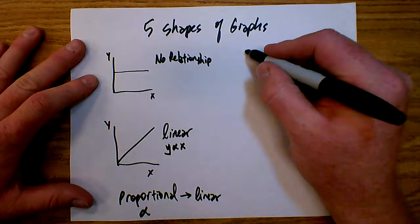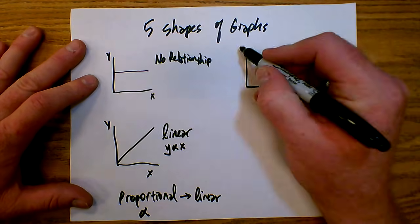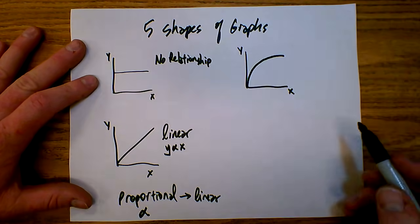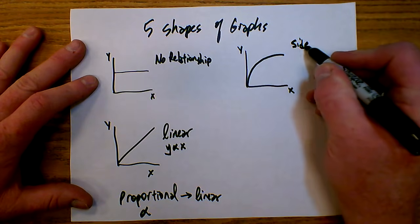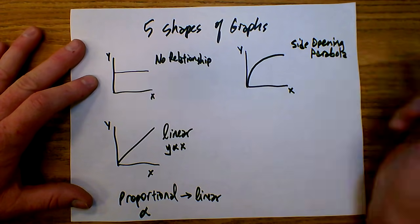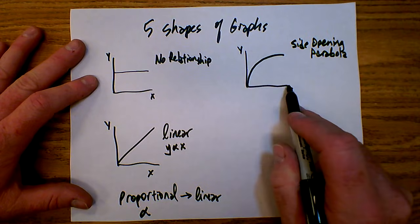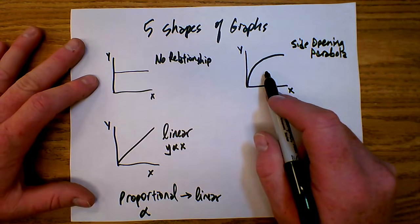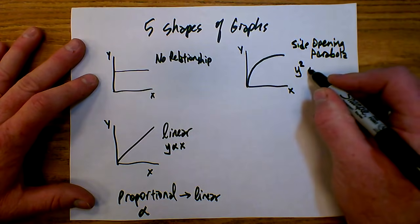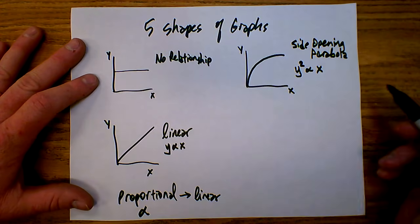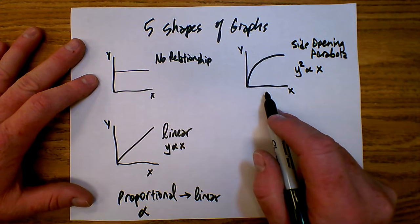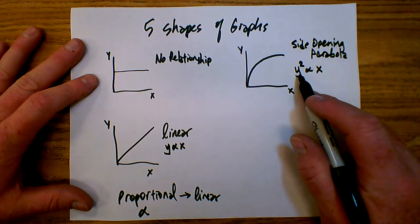The third type of graph we might encounter I call a side-opening parabola. The relationship between the variables: as x gets bigger, y also gets bigger but at a decreasing rate. The relationship here is y squared is proportional to x. In math they might call this a square root graph and say y is proportional to the square root of x — mathematically that's the same — but I prefer to say y squared is proportional to x.